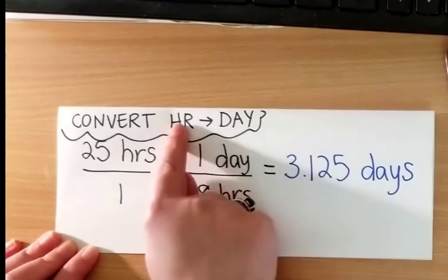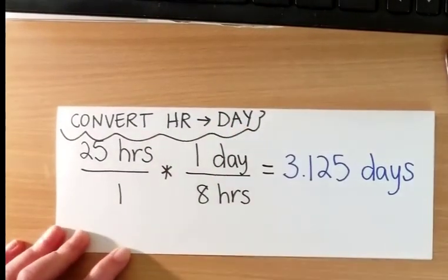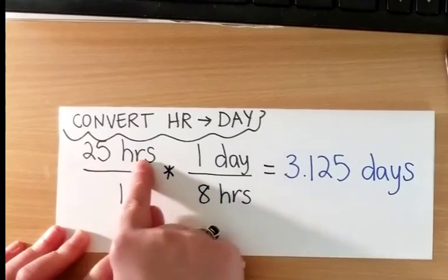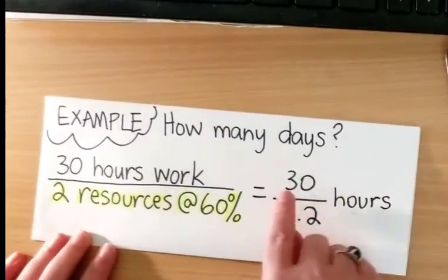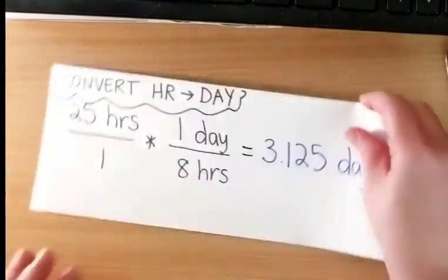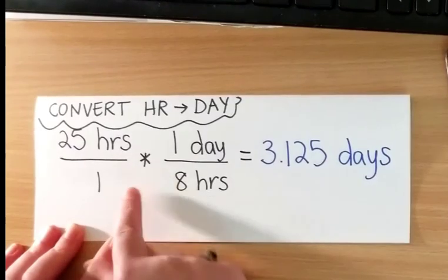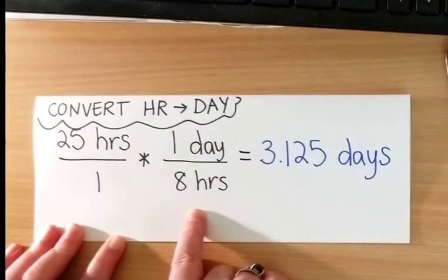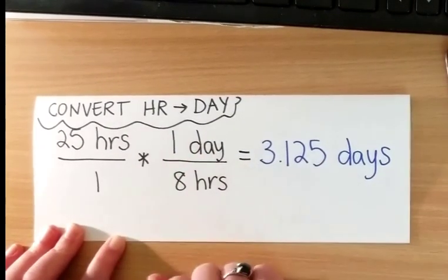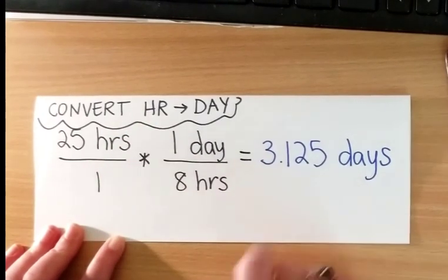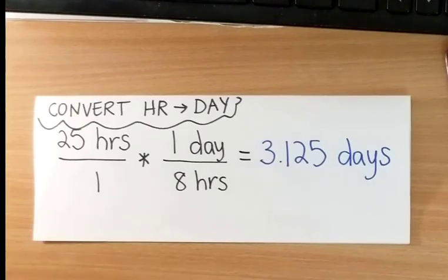So in order to convert hours to days, we just use the conversion framework: 25 hours, remember 30 divided by 1.2, times the conversion ratio of day to hour. In this case, a workday is a maximum of eight hours. And you do the math, and that equals 3.125 days.